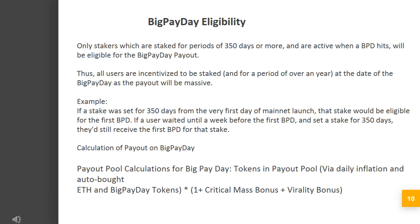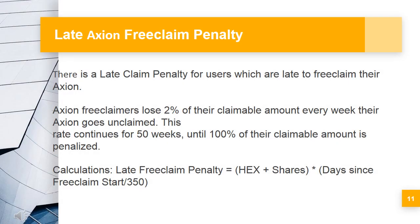Calculation of payout on Big Pay Day. Payout pool calculations for Big Pay Day: tokens in payout pool via daily inflation and auto-bought ETH, and Big Pay Day tokens multiplied by (1 + critical mass bonus + virality bonus). Late Axion free claim penalty: there is a late claim penalty for users who are late to free claim their Axion. Axion free claimers lose 2% of their claimable amount every week their Axion goes unclaimed. This rate continues for 50 weeks, until 100% of their claimable amount is penalized. Late free claim penalty equals: HEX shares × (days since free claim start / 350).